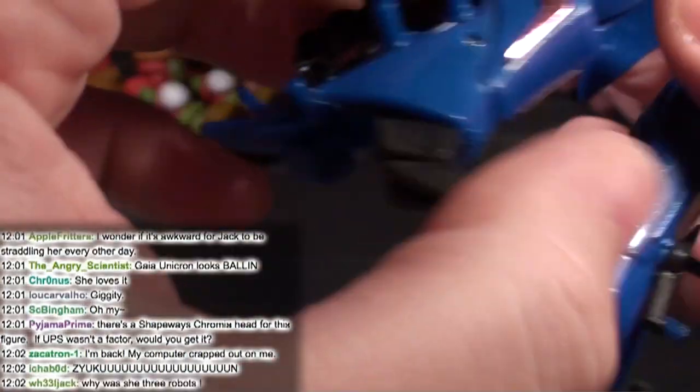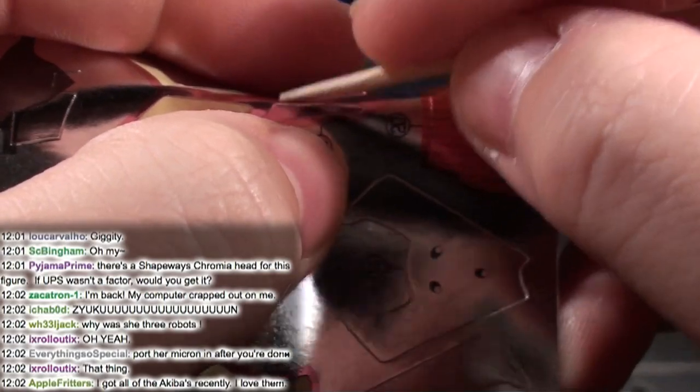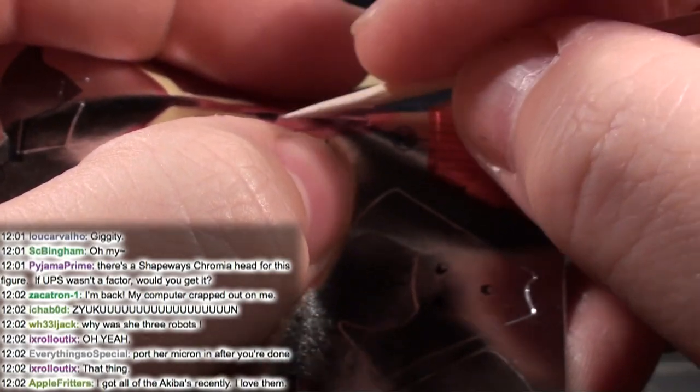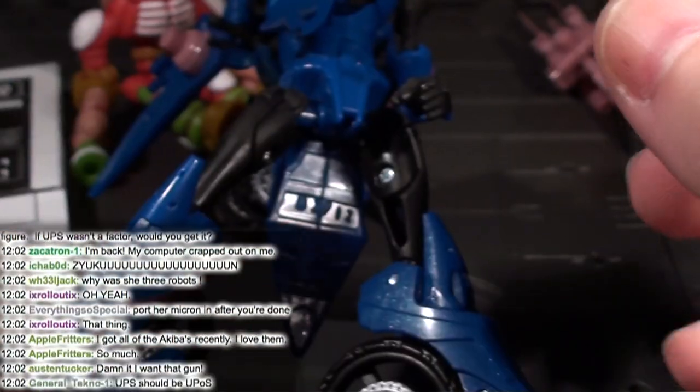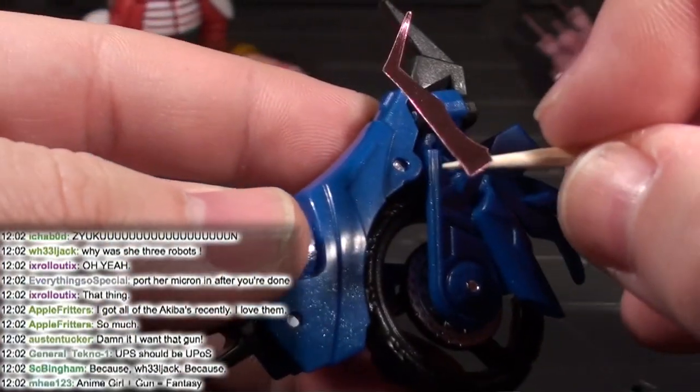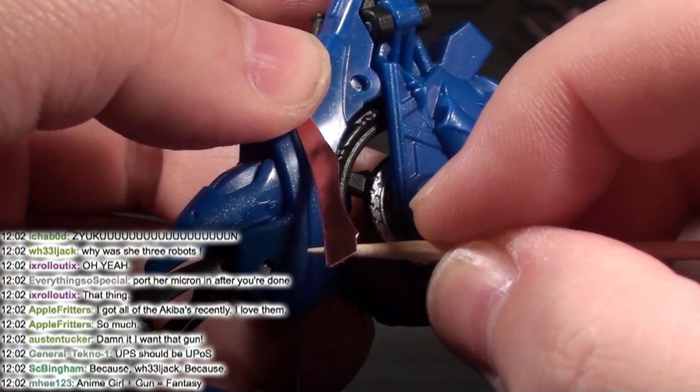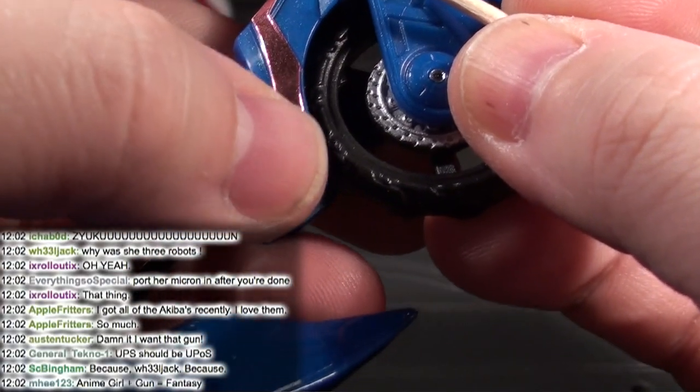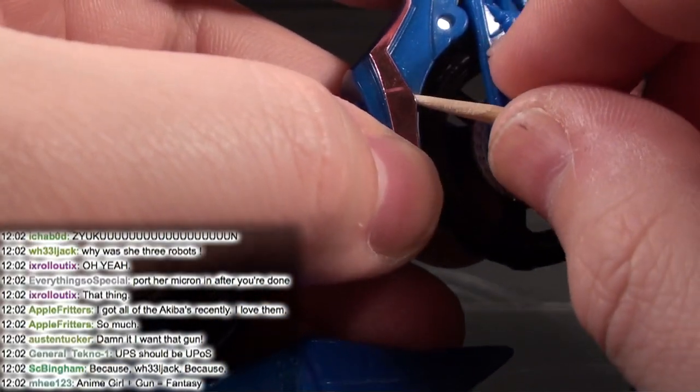All right, Pajama Prime says 'there's a Shapeways Grimace head for the figure. If UPS wasn't a factor, would you get it?' Maybe. If UPS wasn't a factor I'd have hella Shapeways things right now because someone told me like 'oh hey, Shapeways is having free shipping, you have no excuse'. Like no, no, the shipping cost of Shapeways is fine. It's like six bucks to ship something with Shapeways. That's awesome. It's the fact that it's going to be UPS in Canada, who suck, who are like the worst company.